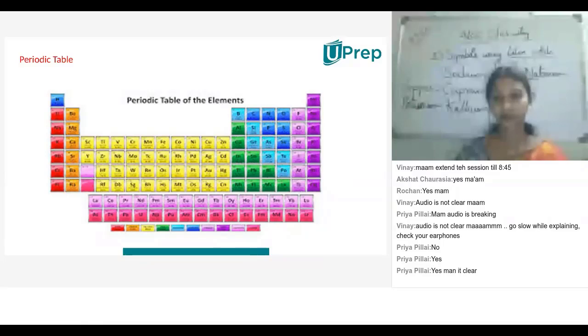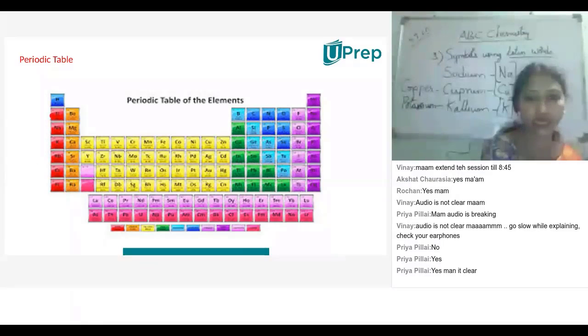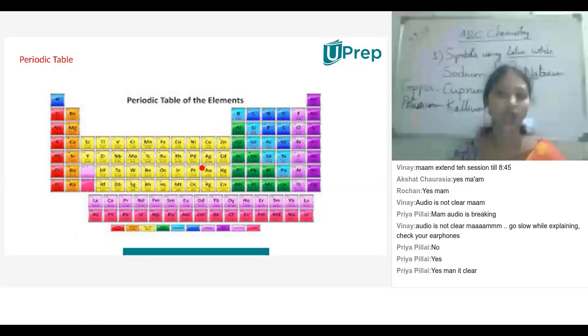The periodic table is the arrangement of elements in different groups, like how people are arranged in school - section wise, class wise, based on different criteria like your mentality, physical characteristics, your age. All these things are arranged in different classrooms in school. Similarly, these elements are arranged in a periodic way, systematic way in the periodic table.